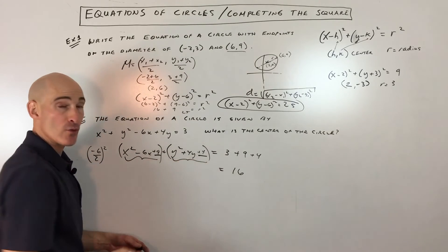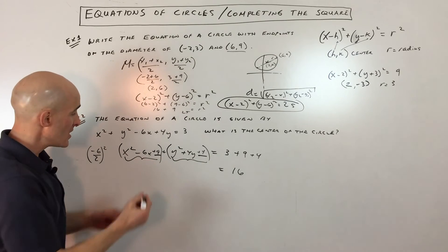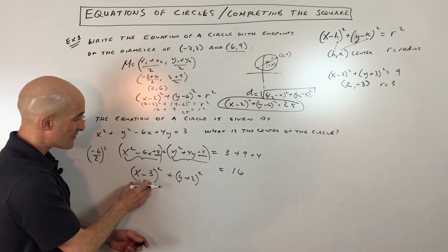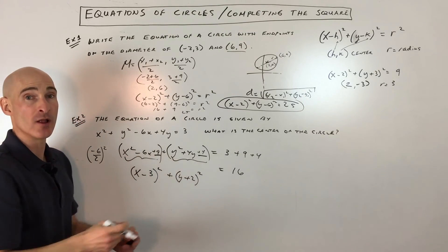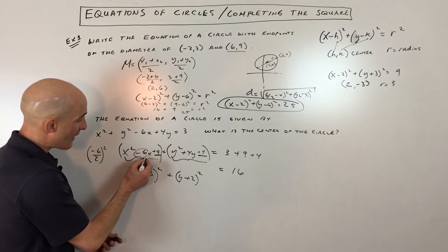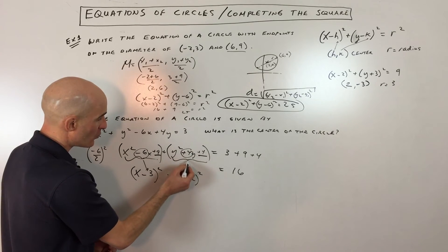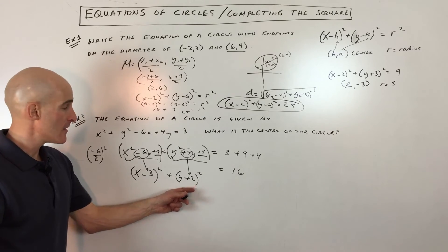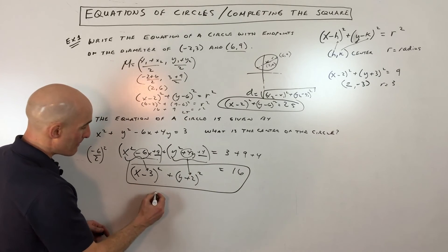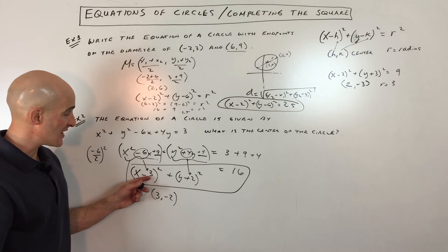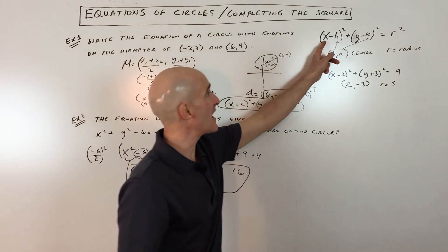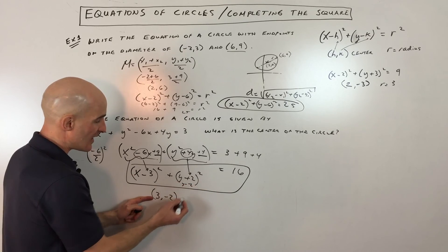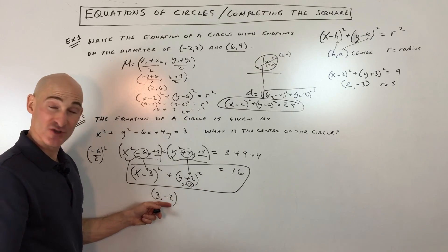Now factor these trinomials. Because we completed the square, they are perfect squares: (x minus three) squared plus (y plus two) squared equals 16. A quick shortcut — take half of the middle coefficient to write the factored form. The center is at positive three, negative two. Some students mistakenly say negative three, positive two, but because the standard form is (x minus h)(y minus k), x minus three means h equals positive three, and y plus two is like y minus negative two, so k equals negative two.